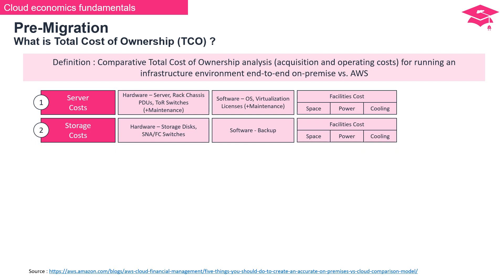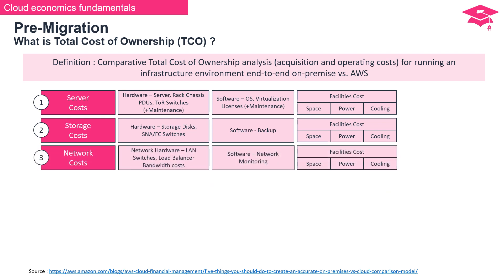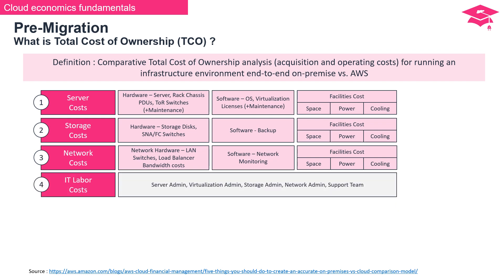Storage cost is the second component, involving hardware expenses for storage disks and SAN or FC switches, software costs like backup solutions, and facilities costs. The third cost component is network cost, including expenses for network hardware like LAN switches, load balancers, bandwidth costs, software expenses for network monitoring, and facilities costs. IT labor costs are the fourth component, encompassing personnel costs for server administrators, virtualization administrators, storage administrators, network administrators, and support teams.